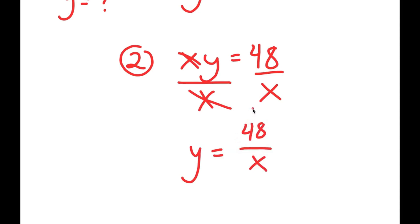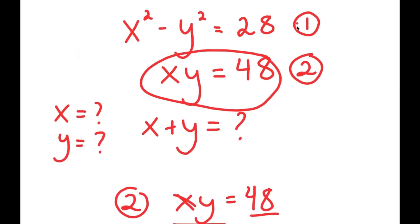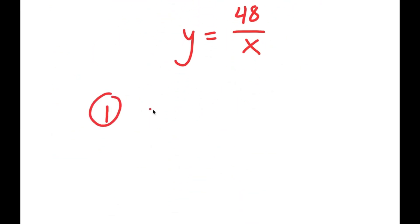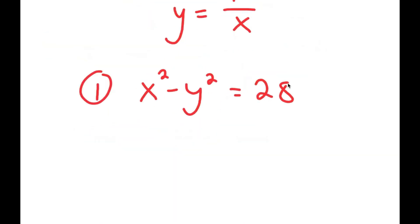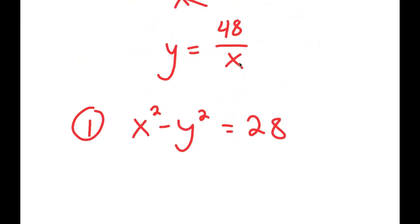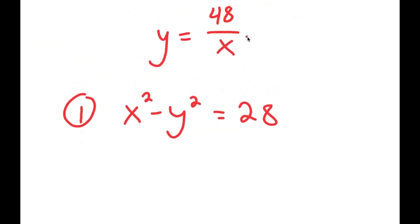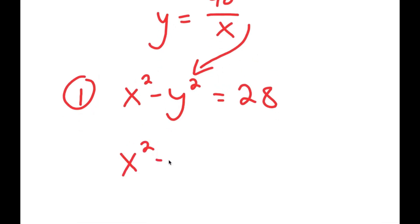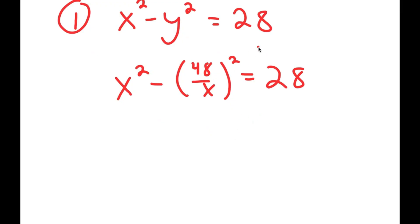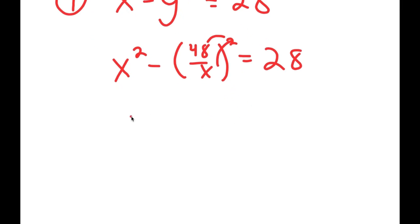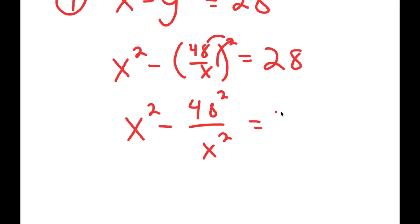Using this equation, I can plug it back into equation one: x squared minus y squared equals 28. Since y equals 48 over x, substituting gives x squared minus (48 over x) squared is equal to 28.